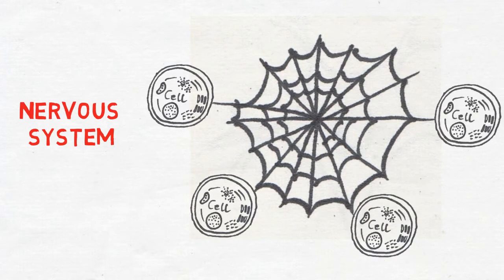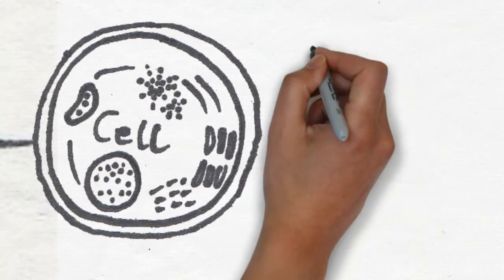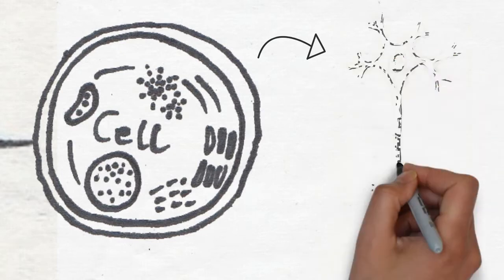The cells that make up the nervous system are divided into two types: neurons and glial cells.